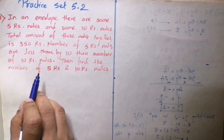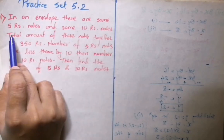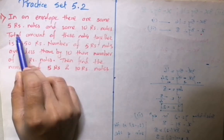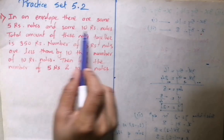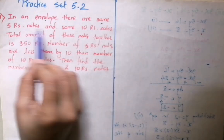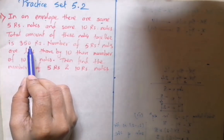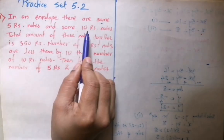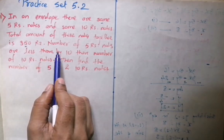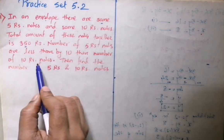So first let's understand the question. Students, listen carefully. In an envelope there are some ₹5 notes and some ₹10 notes. The total amount of these notes together is ₹350. The number of ₹5 rupees notes is less by 10 than the number of ₹10 rupees notes.